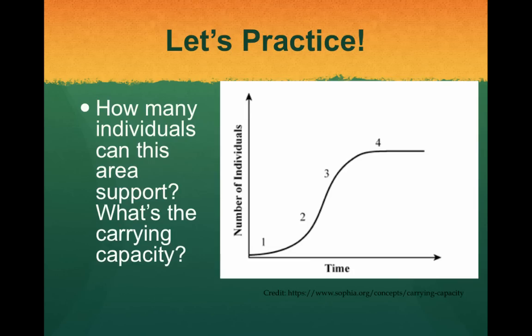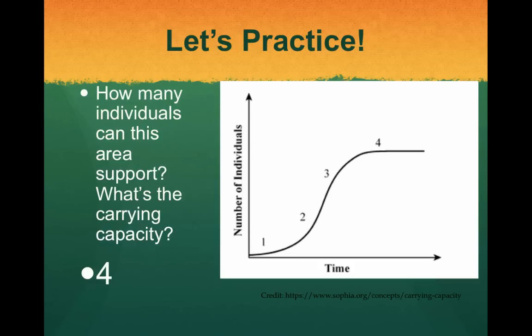Let's practice. Looking at this graph where we have the number of individuals on one axis and time on the other — how many individuals can this area support? What's the carrying capacity? Look at the number of individuals and the time, and ask at what point the population maxed out. You should have written down that four was the maximum. The population keeps increasing and then finally stabilizes after about four years.